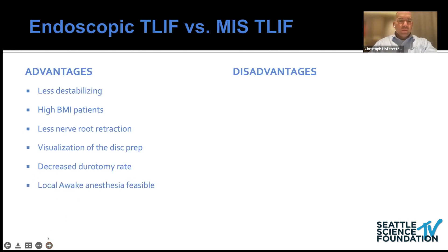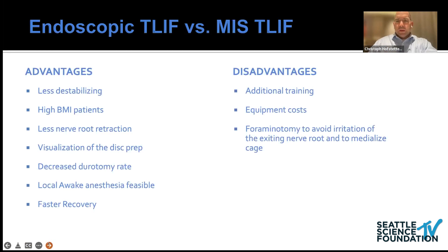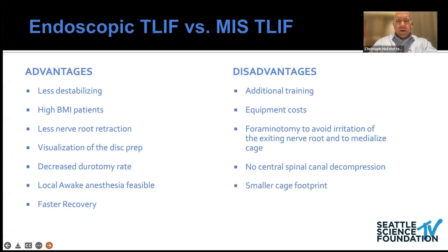It is feasible to do these surgeries with local anesthesia, and there's definitely a faster recovery. Disadvantages: there's a training curve requiring a lot of effort, even though the endoscopic T-LIF is technically one of the easiest full endoscopic procedures in terms of handling the endoscope. There's an upfront cost, but not more than a microscope. We have to do a foraminoplasty, and it's difficult right now with severe central canal compression, though I started doing those endoscopically recently. The cages are still smaller, but this is changing rapidly.